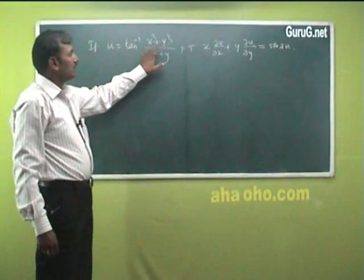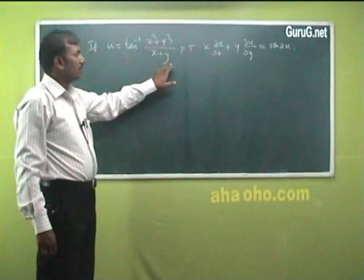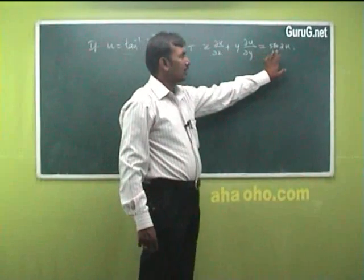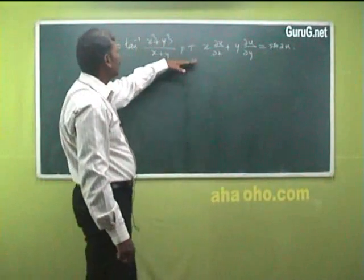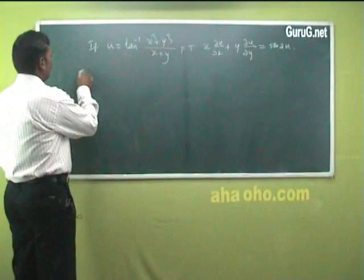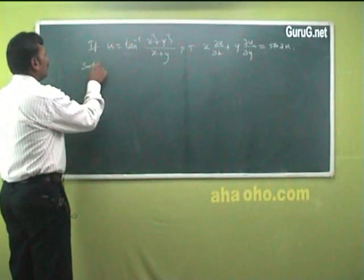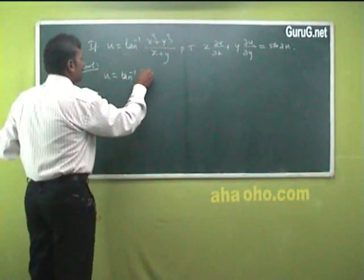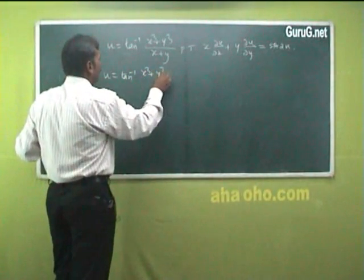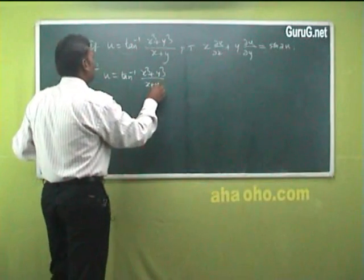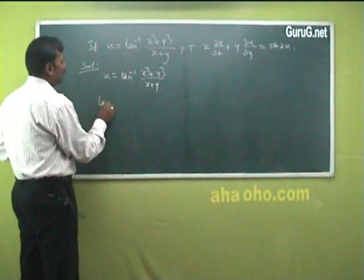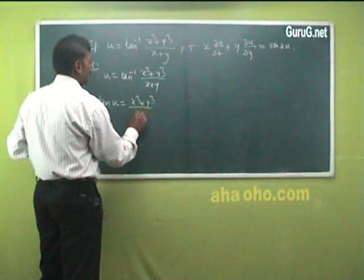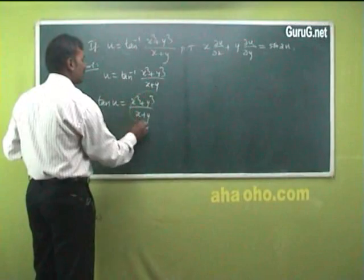Let u = tan⁻¹[(x³ + y³)/(x + y)]. Prove that x·∂u/∂x + y·∂u/∂y = sin(2u). We can prove this result by using Euler's theorem. Given u = tan⁻¹[(x³ + y³)/(x + y)], we take tan(u) = (x³ + y³)/(x + y), and take this expression as f.